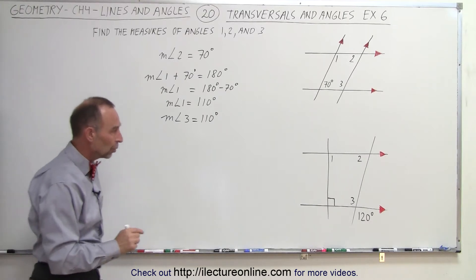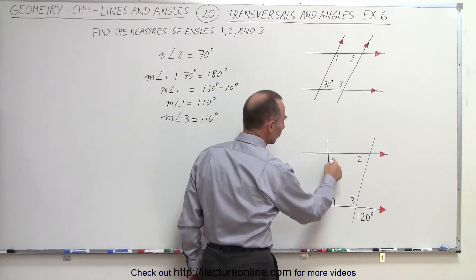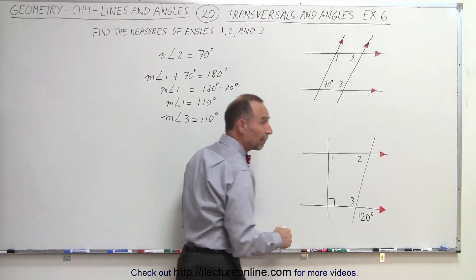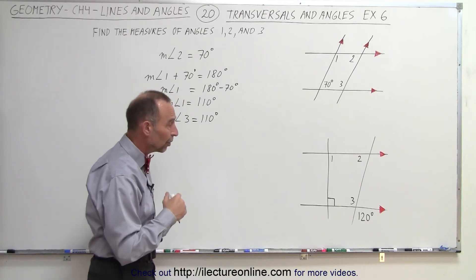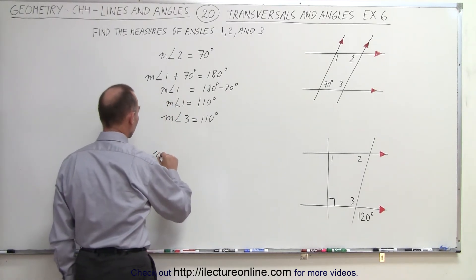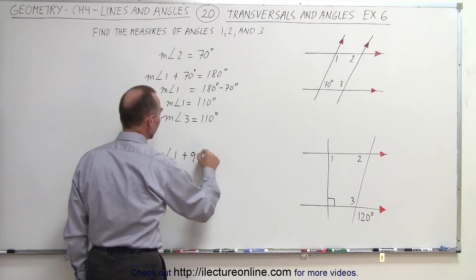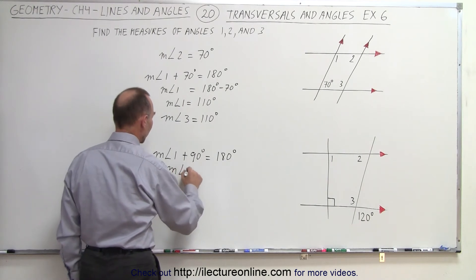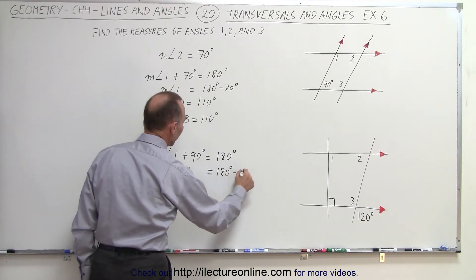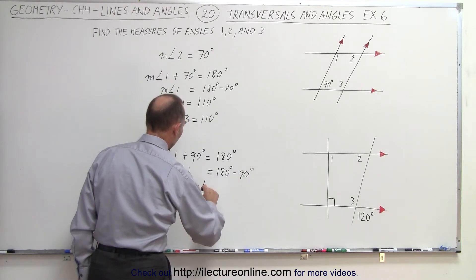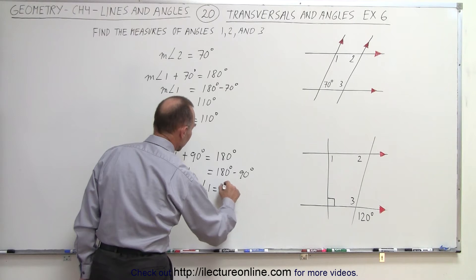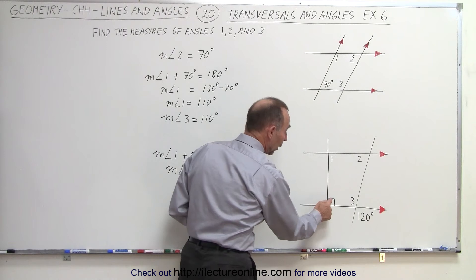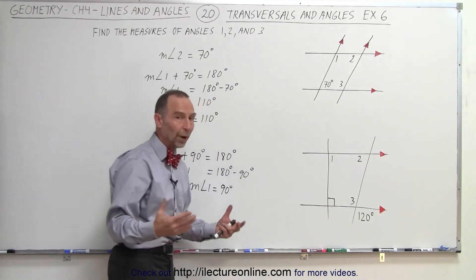Starting with the exercise on the bottom, notice that this is a 90 degree angle, and angle 1 is what we call a consecutive interior angle. By the rule, consecutive interior angles must add up to 180 degrees, which means that the measure of angle 1 plus 90 degrees equals 180 degrees. Subtracting 90 from both sides, the measure of angle 1 equals 90 degrees. We can simply realize that when one consecutive interior angle is a right angle, the other must be a right angle as well.